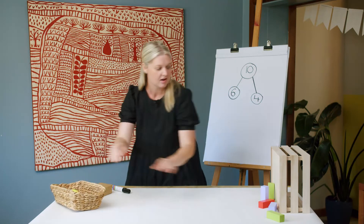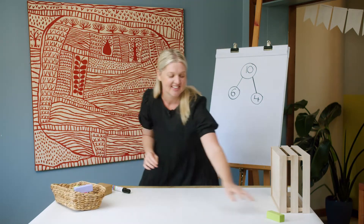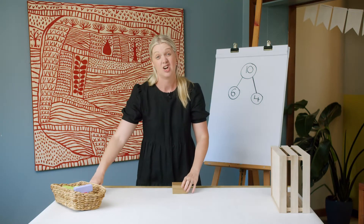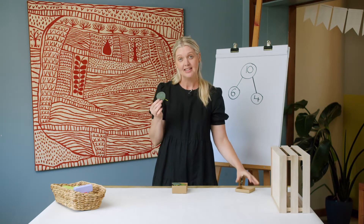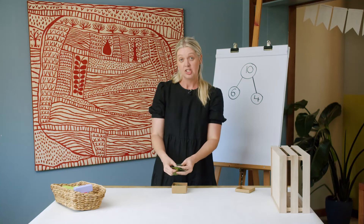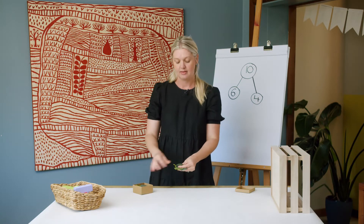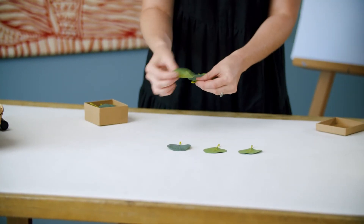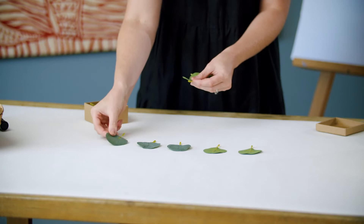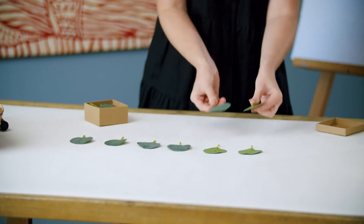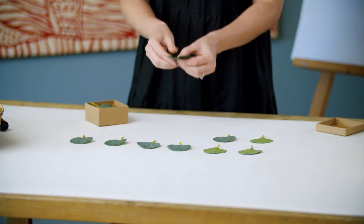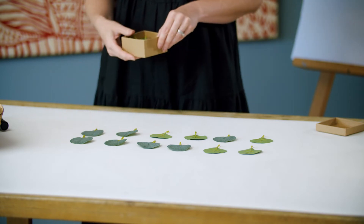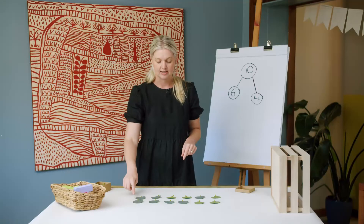Let's explore subtraction in another way — we'll put our pins away. What have you got at your house that you could subtract with? I'm going to use some leaves. I'm going to get a collection to start with and line them up so they can be counted: 1, 2, 3, 4, 5, 6, 7, 8, 9, 10, 11, 12. Six and six is 12.